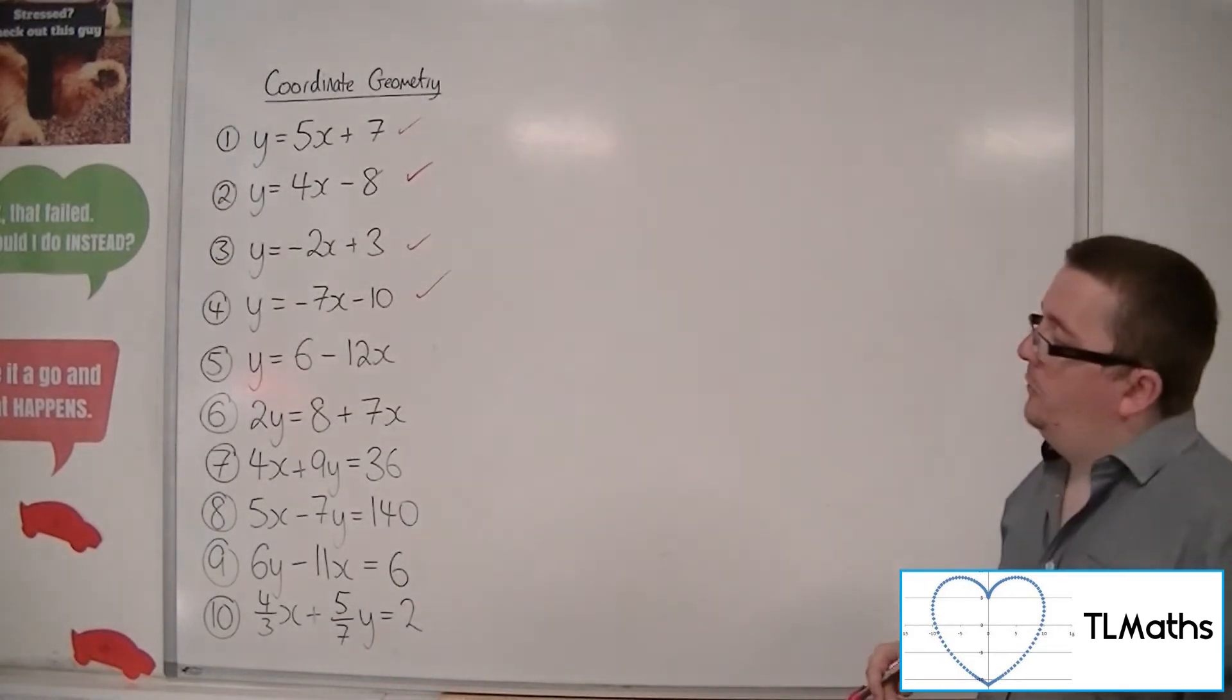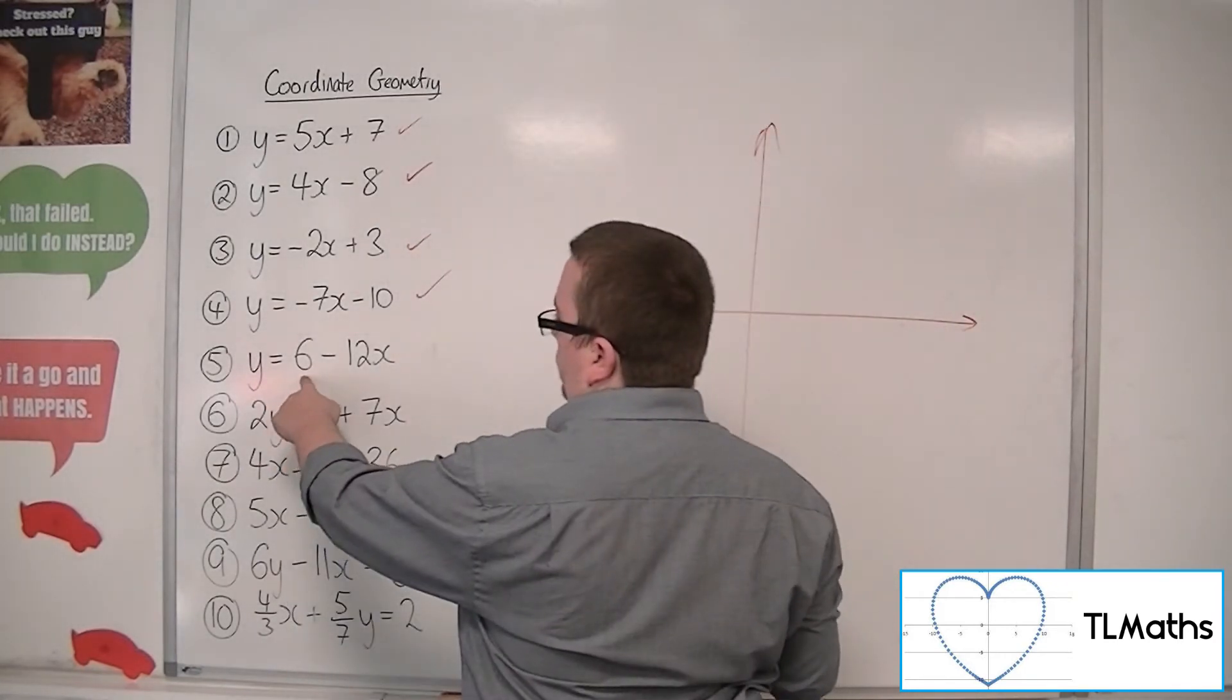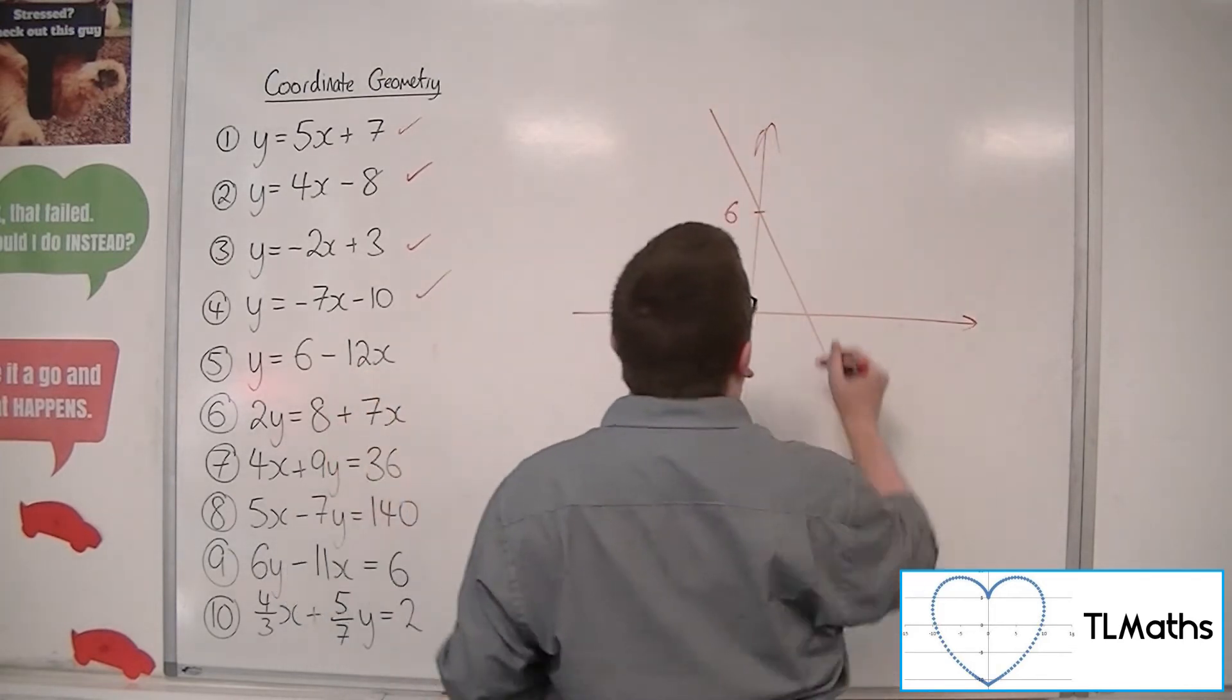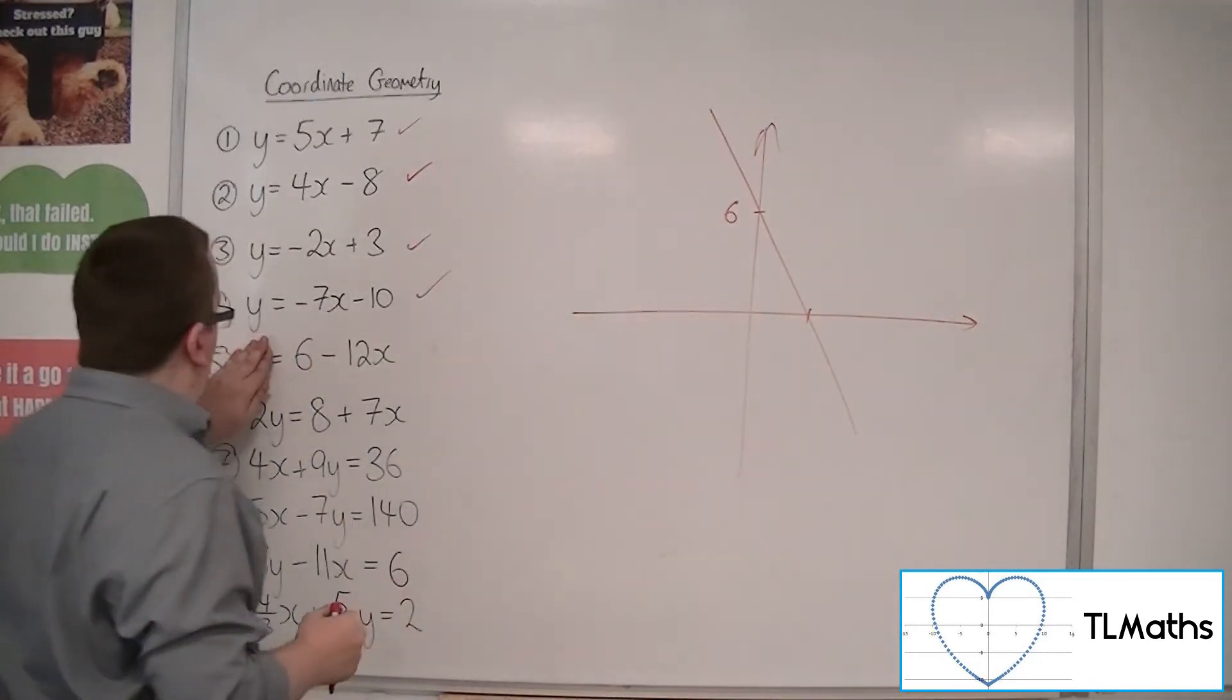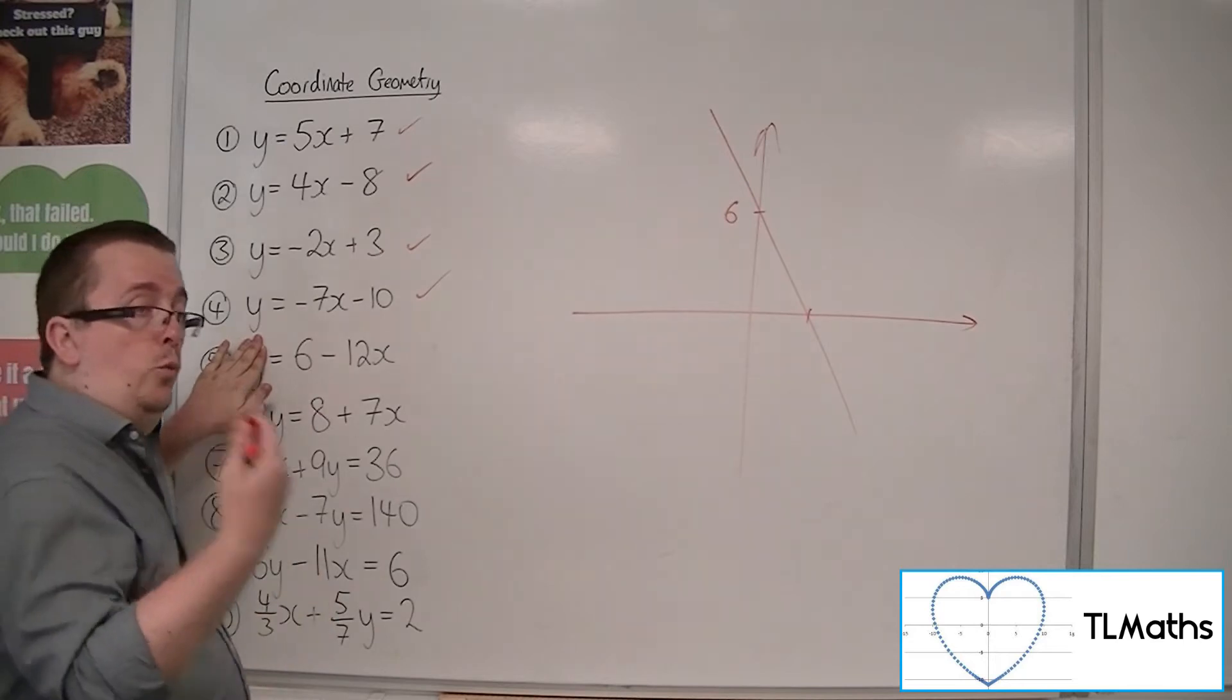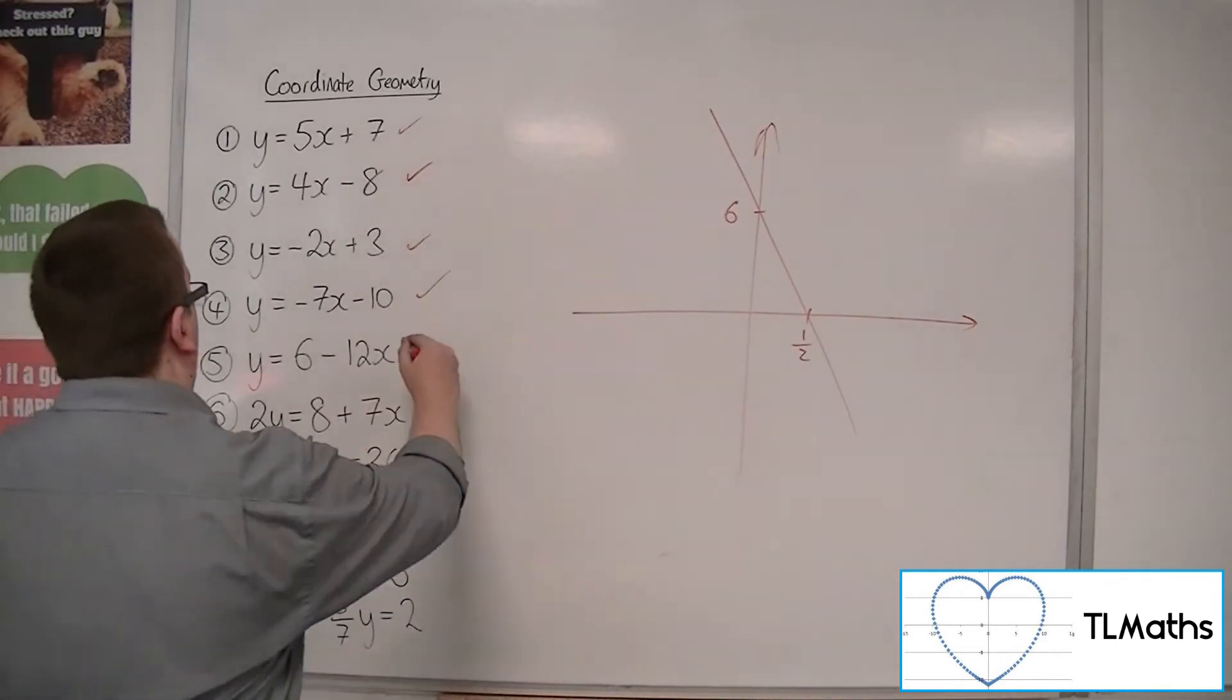Right, so number 5, y equals 6 minus 12x. So this one, we're going through 6 on the y-axis. We've got a negative gradient, so quite steep negative gradient, minus 12. So where is it crossing the x-axis? So when y is 0, add the 12x to both sides. So 12x equals 6. So x is 6 over 12, or 1 half. So positive 1 half is where it's crossing the x-axis. Okay, so that's number 5.